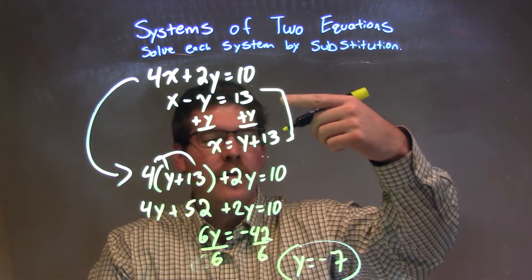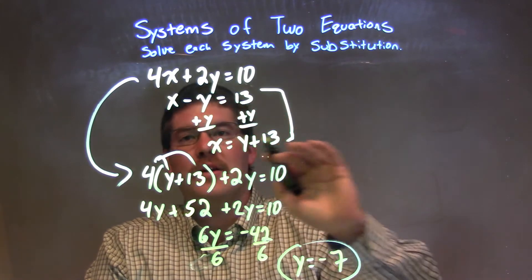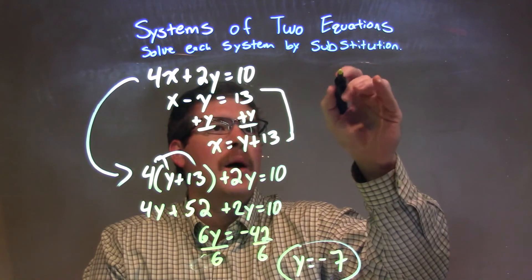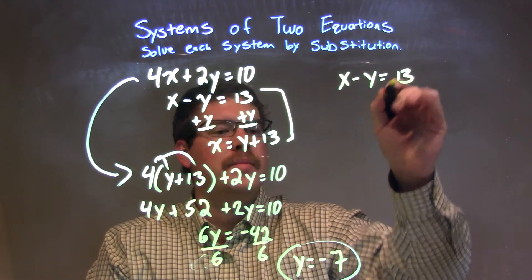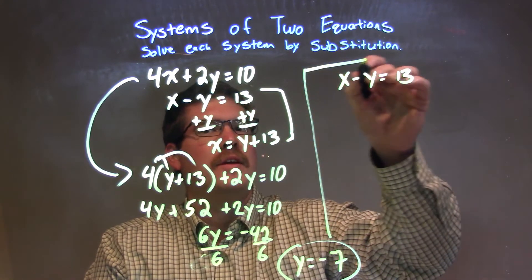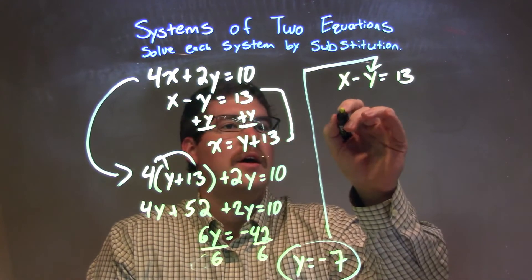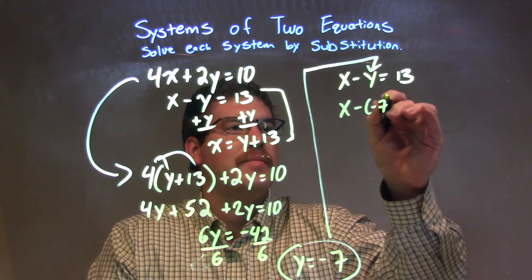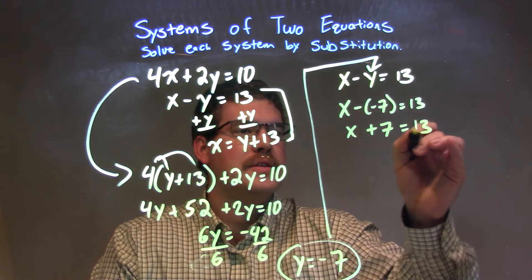I'm going to plug it back into one of my other equations to find the x value. Luckily for me, the second equation looks pretty easy. So I'm going to rewrite the second equation: x minus y equals 13. And we plug that negative 7 in for the y. So we have x minus negative 7 equals 13, which is really x plus 7 equals 13.